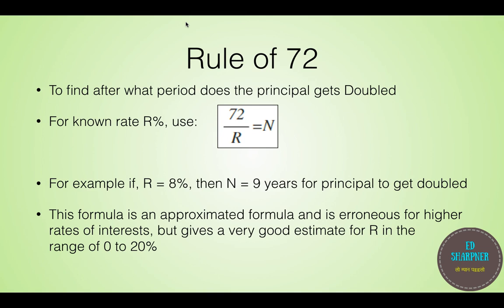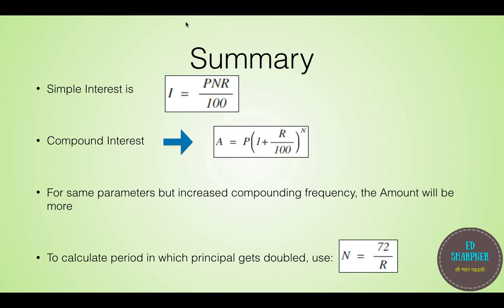Please remember, this formula is an approximated version and is a bit erroneous for higher rates of interest such as greater than 20%. Now let us see the summary. The formula for simple interest is I equals to PNR divided by 100. And for the compound interest, the formula is amount A is equal to principal into 1 plus R divided by 100 raised to N. For the same parameters but increased compounding frequency, the amount will be more. We just have to make minor change in the formula of compound interest, where R by 100 changes to R by 100T and the power N changes to power NT. The T is nothing but the frequency of compounding per year.